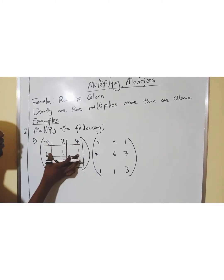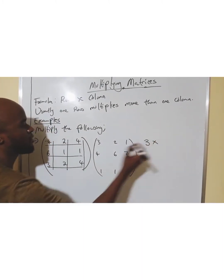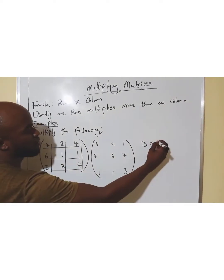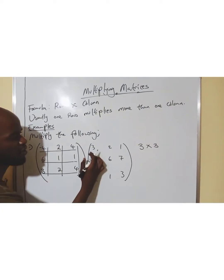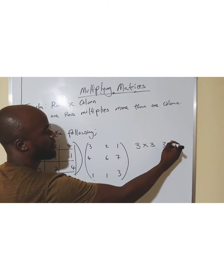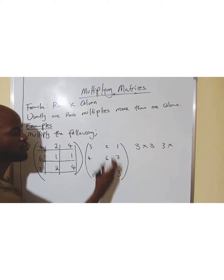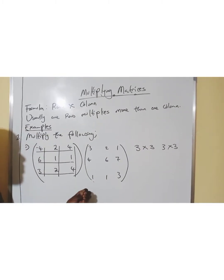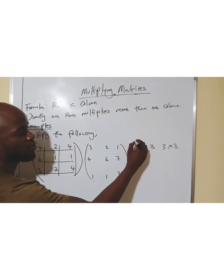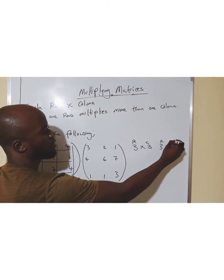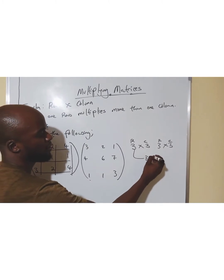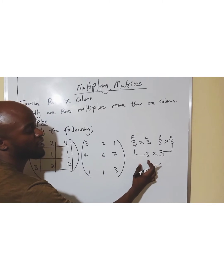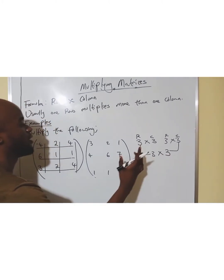So, how many rows do you see? We have one, two, three — we have three rows. We're finding the order here. How many columns? One, two, three — so three. And then here, same thing: one, two, three by columns — one, two, three. Three by three. So, now when I multiply these two matrices, the answer will have three rows and three columns. Very important.